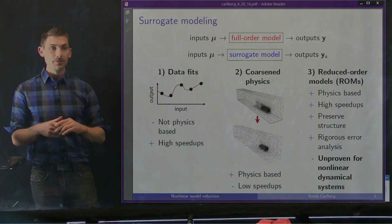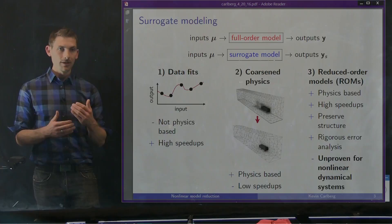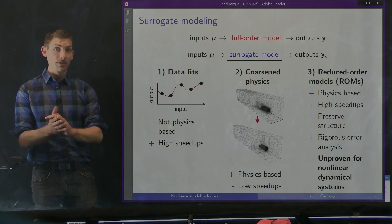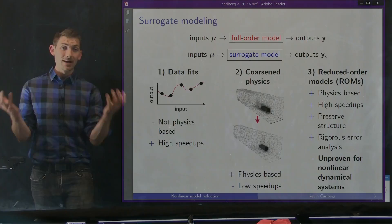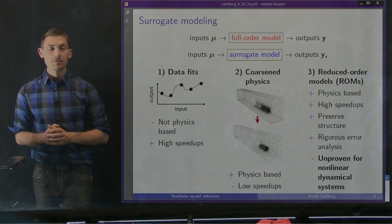Another approach is what we call a coarsened physics approach or lower fidelity model. These approaches lower the finite element order, coarsen the mesh, or remove some physics — for example going from Navier-Stokes to Euler — generating a cheaper model that is still physics-based. However, we can generate only limited speedups by coarsening the mesh or physics. We can only coarsen the mesh so much before we're totally outside the asymptotic range of convergence of our discretization method and our results aren't very accurate.